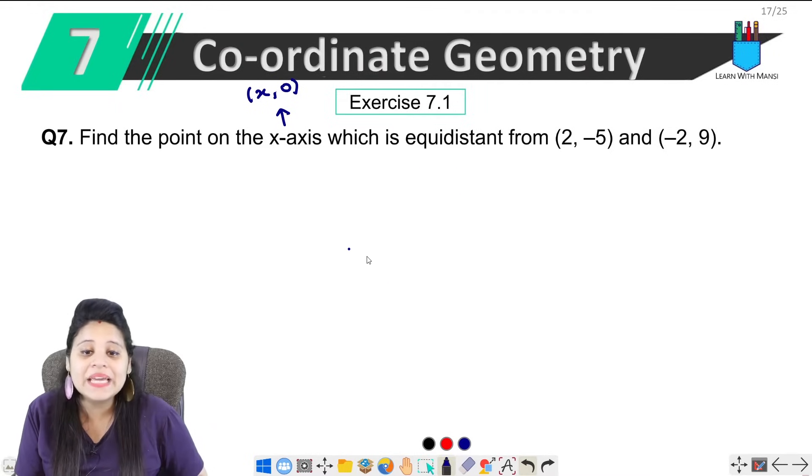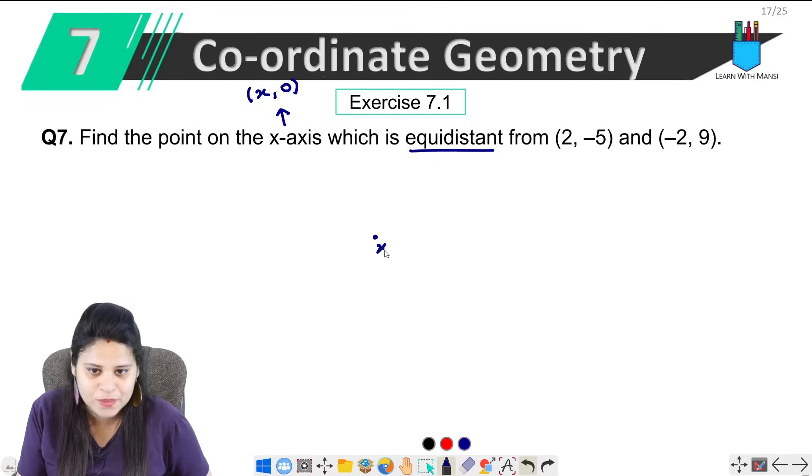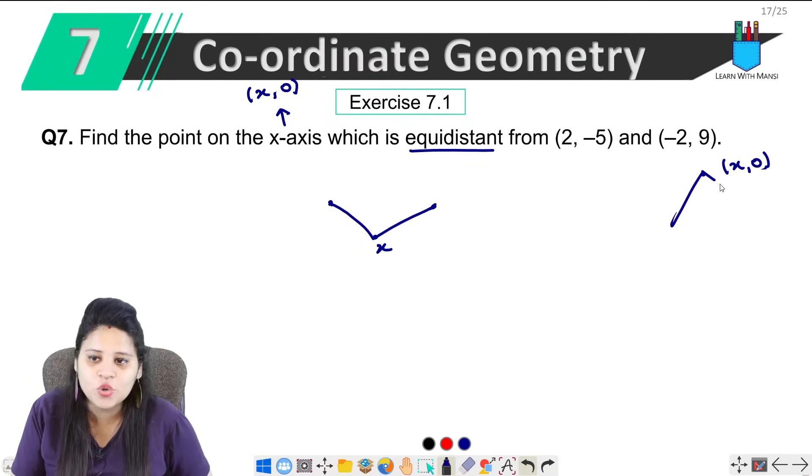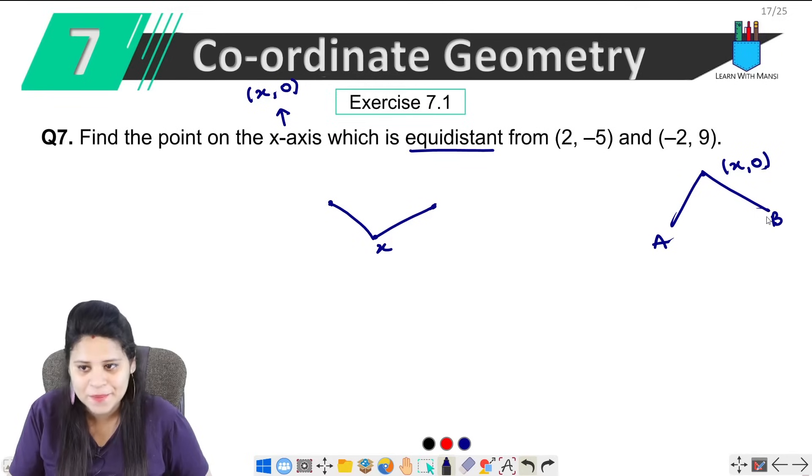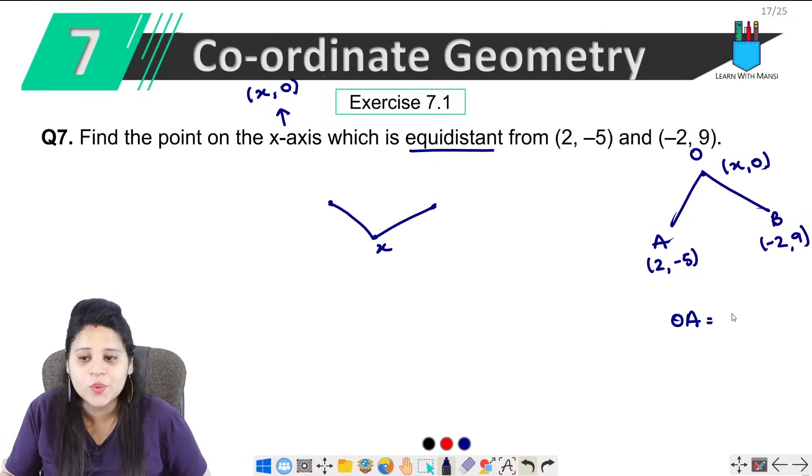Next, what does equidistant mean? Equidistant means equal distance. If there is a point, which is our x point, then these two points are equal distance. Let's suppose this point is (x, 0). Now these two points, let's call them A and B. Let's call this point O. So this point is A and B. Equidistant means that OA equals OB.